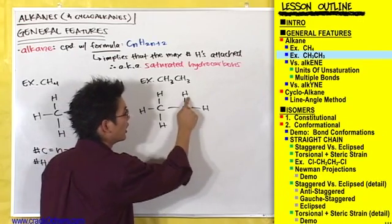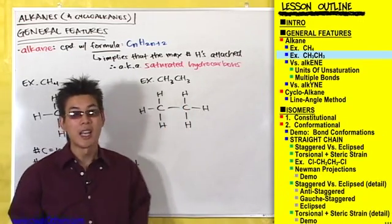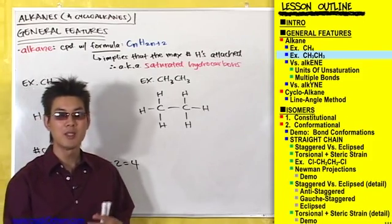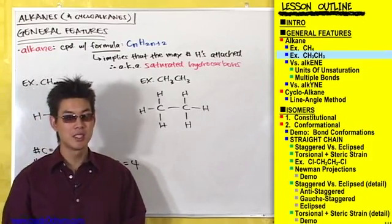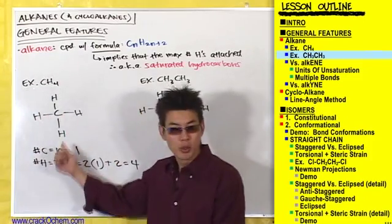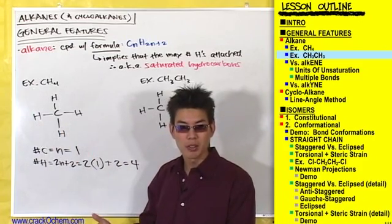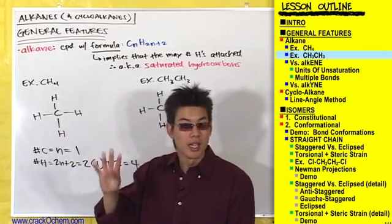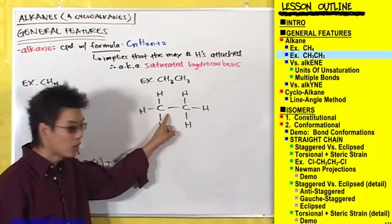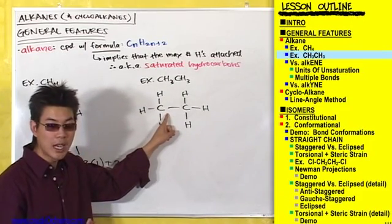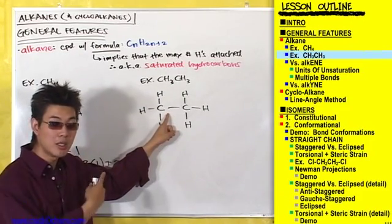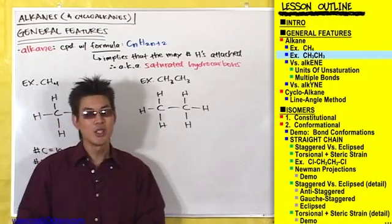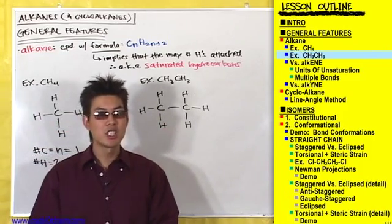A lot of people get confused by this because just a second ago with methane we said the max number of hydrogens attached to a carbon was four, and the carbons on ethane only have three hydrogens attached — but we still consider them to be saturated. So let me refine the definition of a saturated hydrocarbon.